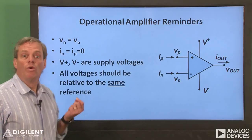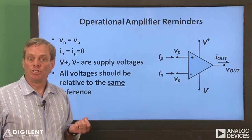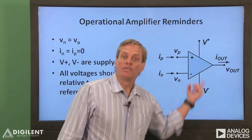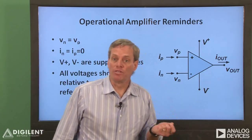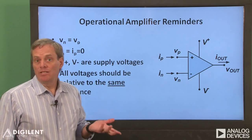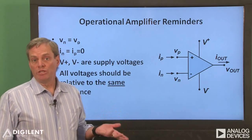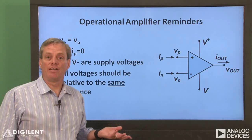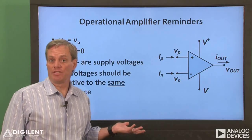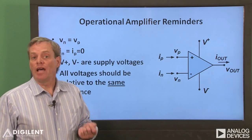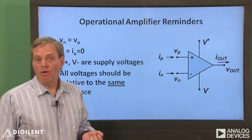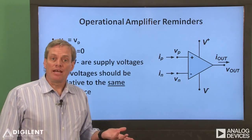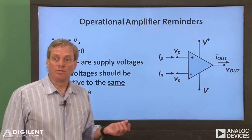One very important point relative to the voltages on this diagram: they should all be relative to the same reference voltage. This isn't a big deal if you're using only the Analog Discovery, since all of the voltages provided by it are automatically relative to the same voltage. But if you're using other sources of power in your circuit, you may need to physically interconnect them to ensure a common reference.